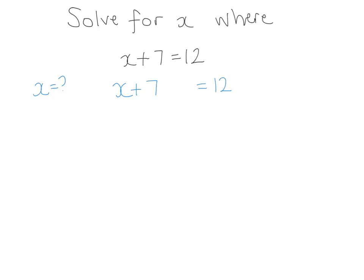Now what is the opposite of plus 7? Well the opposite of a plus is a minus and the opposite of plus 7 is minus 7. And we'll keep the equation balanced by doing a minus 7 on both sides.